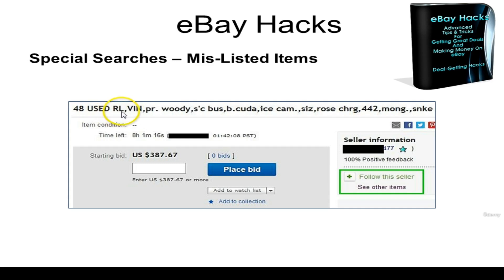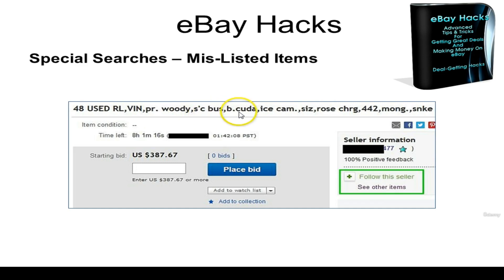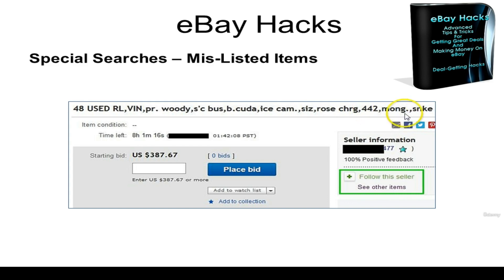'48 used red lines' — red lines is the term for vintage Hot Wheels. 'VIN' here means vintage. 'PR' stands for purple Woody, which is a car. 'S'C bus' stands for school bus. 'B da Cuda' stands for Barracuda, or maybe brown Cuda. 'Ice Cam' is ice blue Camaro. 'CIS' stands for Sizzler, a different type of Hot Wheels car. 'Rose Charger,' '442' is an Oldsmobile 442, and then there's Mongoose and Snake.